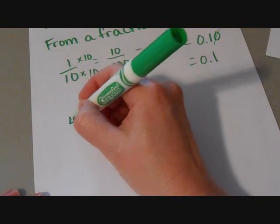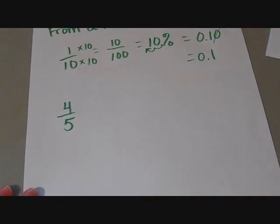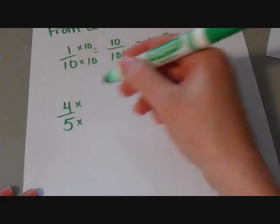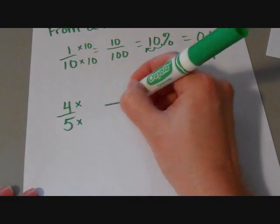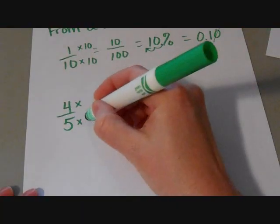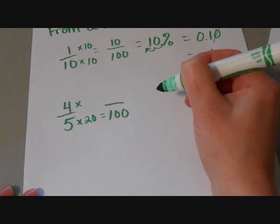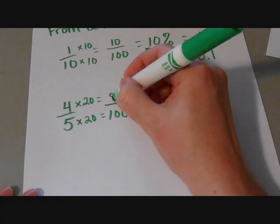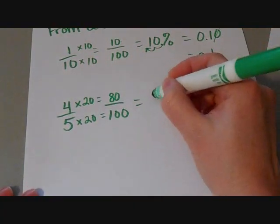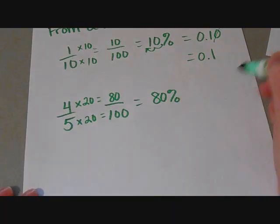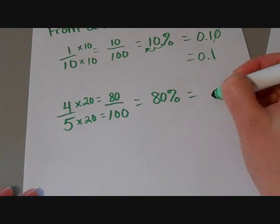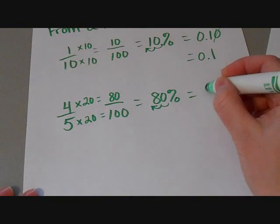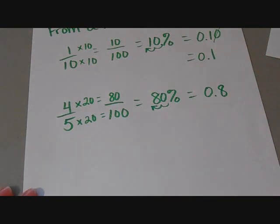Let me give you four-fifths. Again, what we can do is multiply or find an equivalent fraction that will give us something over one hundred. Well, I know that five times twenty equals one hundred. So that means I have to multiply the top times twenty as well. Four times twenty is eighty. That gives me eighty percent. And then, of course, we can turn that into a decimal by moving that decimal over two times to the left, and this would be zero point eight or eight tenths.